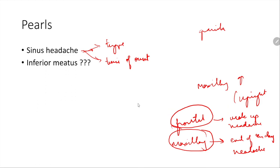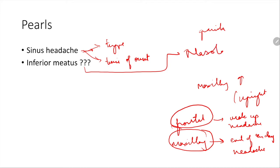We talked about sinuses draining into the superior or middle meatus, with most draining into the middle meatus. A commonly asked question is: what drains into the inferior meatus? The answer is the nasolacrimal duct.